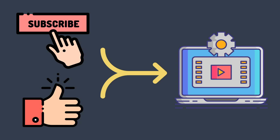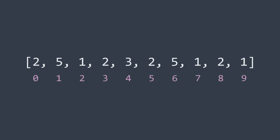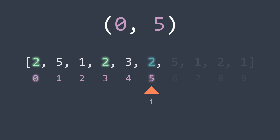For this method, we will use the fact that if an element R[i] has the value k, and we've already seen that value n times before in the array, then R[i] is the second element of n good pairs — in other words, we found n new good pairs. For example, at index 5 we have the value 2, and we already found the value 2 twice before arriving at index 5, meaning R[5] is the second element of 2 good pairs.